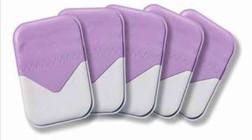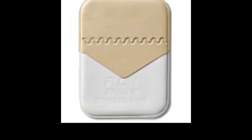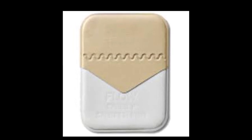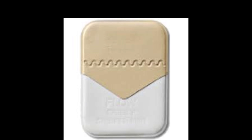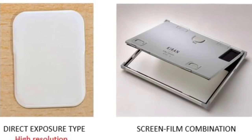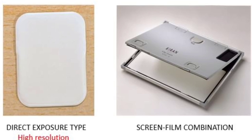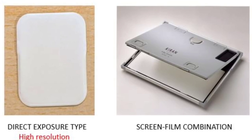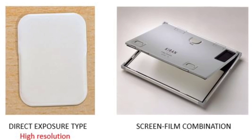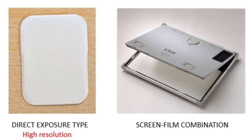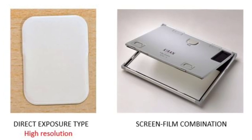An intraoral x-ray film packet contains either one or two sheets of film inside. When it is a double film packet, the second film is used as a duplicate record, but in India mostly we use single film packets. The x-ray film used for intraoral radiography is of direct exposure type, because this type gives higher resolution images than screen-film combination ones. Diagnostic tasks like detection of incipient caries or early periapical disease demand this kind of high resolution, hence direct exposure type is used.